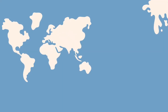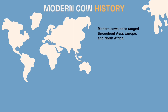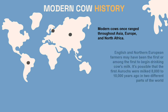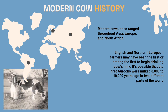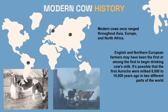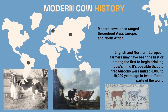Moving on to modern cow history. Modern cows once ranged throughout Asia, Europe, and North Africa. English and Northern European farmers may have been the first, or among the first, to begin drinking cow's milk. It's possible that the first aurochs were milked 8,000 to 10,000 years ago in two different parts of the world.